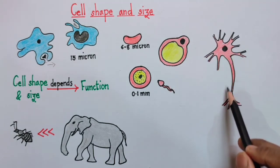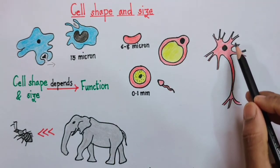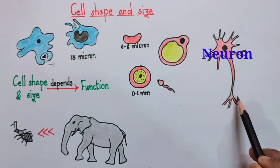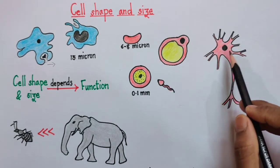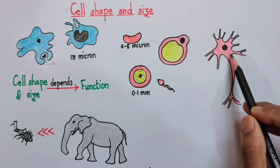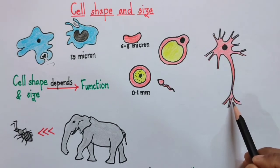Now this, as you can see, is a thin, long, branched neuron. And why is it having this shape? It is because this shape allows it to receive and at the same time transmit the signals in a better manner.